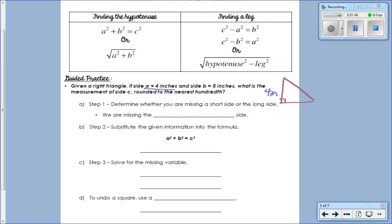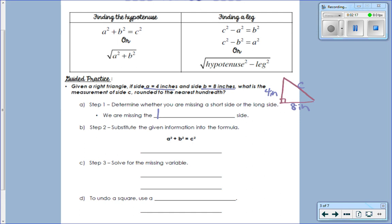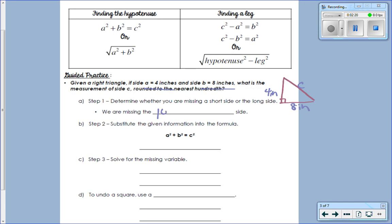So that's 4 inches and side B will be 8 inches. And they want to know side C. Side C is also called what? The hypotenuse. Step one: Determine whether you're missing the short or the long side. We're finding the hypotenuse all day today. The hypotenuse is the longest side. That's a good check.